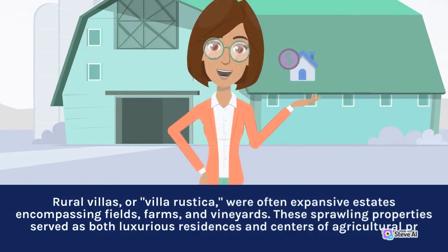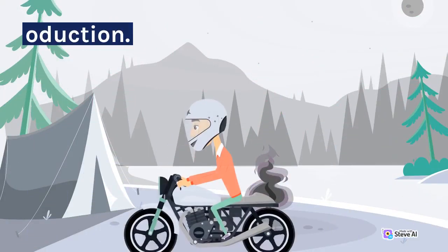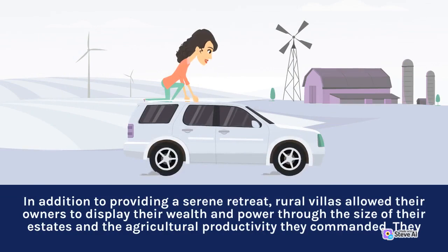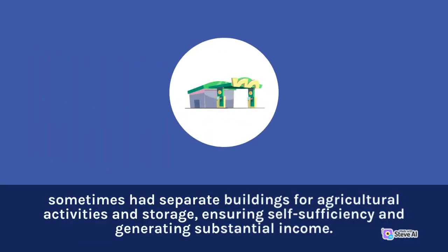Rural villas, or Villa Rustica, were often expansive estates encompassing fields, farms, and vineyards. These sprawling properties served as both luxurious residences and centers of agricultural production. In addition to providing a serene retreat, rural villas allowed their owners to display their wealth and power through the size of their estates and the agricultural productivity they commanded. They sometimes had separate buildings for agricultural activities and storage, ensuring self-sufficiency and generating substantial income.